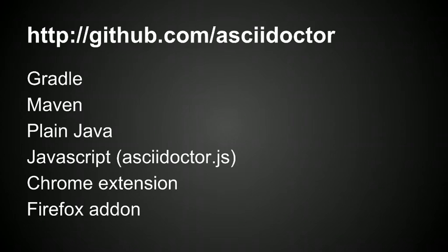You can also run AsciiDoctor through JavaScript. Ruby has a transpiler called Opal that transforms Ruby code into JavaScript code. Now you can run AsciiDoctor on the browser or anywhere where JavaScript can be run. There's also a Chrome extension and a Firefox add-on. You will see a small icon on one of the sides of your browser, and if you're looking at an AsciiDoc source and click that button, it will immediately be rendered in HTML using the default style.